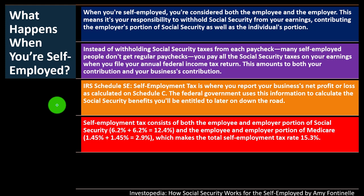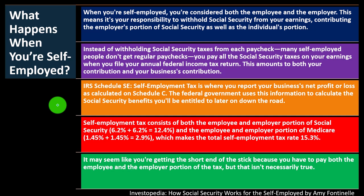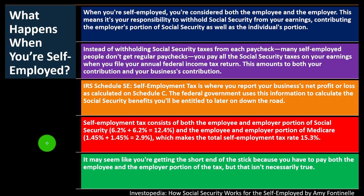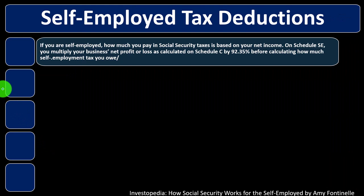The employee and employer portion of Medicare is 1.45% plus 1.45%, which is 2.9%. So you've got the 12.4% plus the 2.9%, making the total self-employment tax 15.3%. It may seem like you're getting the short end of the stick because you have to pay both the employee and employer portion of the tax — but that isn't necessarily true, because of self-employed tax deductions.